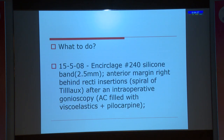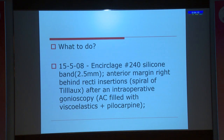We decided to go ahead and do an encirclage with a 240 silicone band which has a width of 2.5 mm. The anterior margin was placed right behind the recti insertions. Intraoperative gonioscopy was done to fill the anterior chamber with viscoelastics and pilocarpine to see if there was any cyclodialysis cleft, but we couldn't make out any intraoperatively.